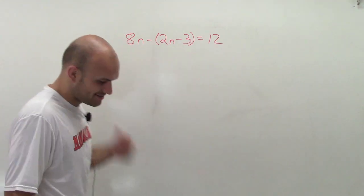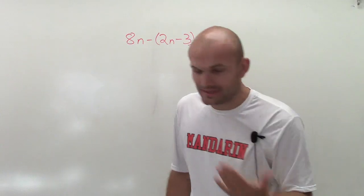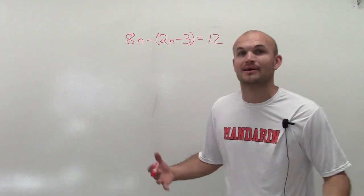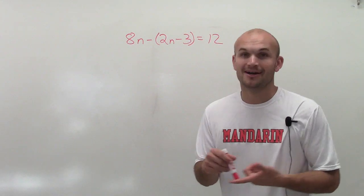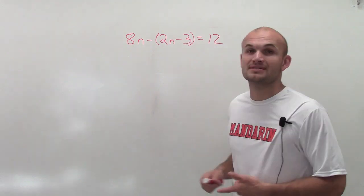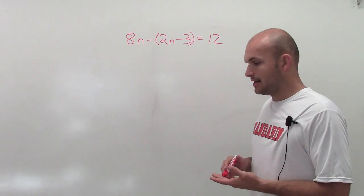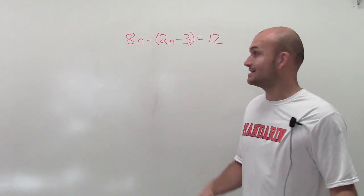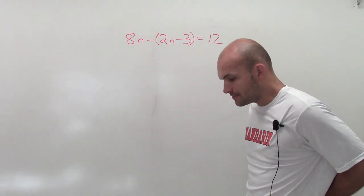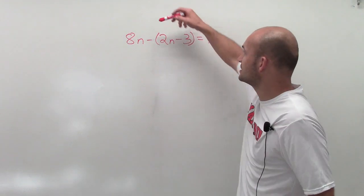Alright, so solving this multi-step problem. The reason why this is multi-step is there's more than two steps to isolating a variable. Now, the thing to notice about this problem is I have parentheses, and when I have parentheses I automatically think of order of operations and distributive property.